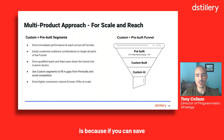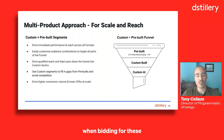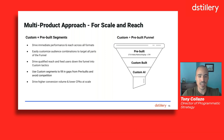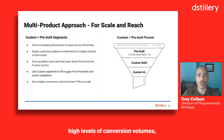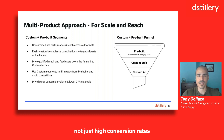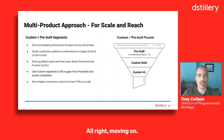If you can save on your average bid when bidding for high-value audiences during times of high competition, you can serve more impressions for the same amount of budget at lower CPAs, so you can maintain high levels of conversion volumes. That's key when marketers are looking for high conversion volumes, not just high conversion rates, during these holiday seasons.